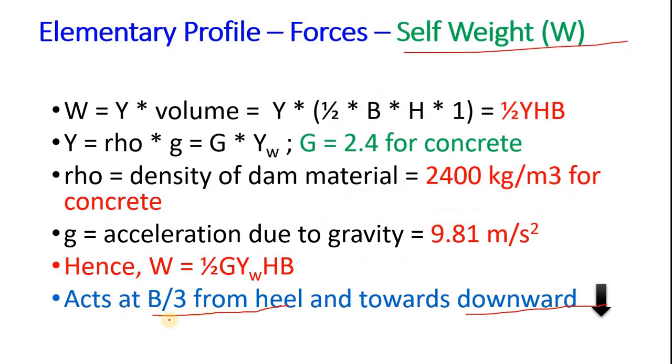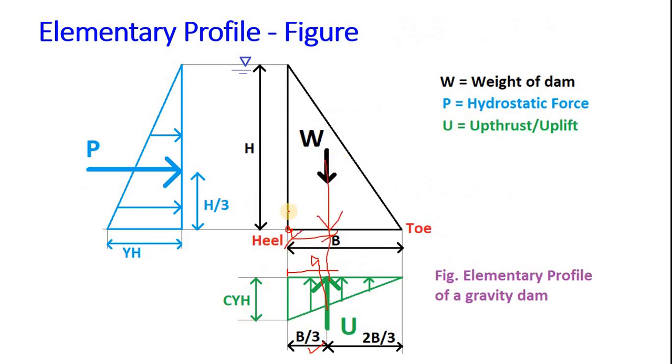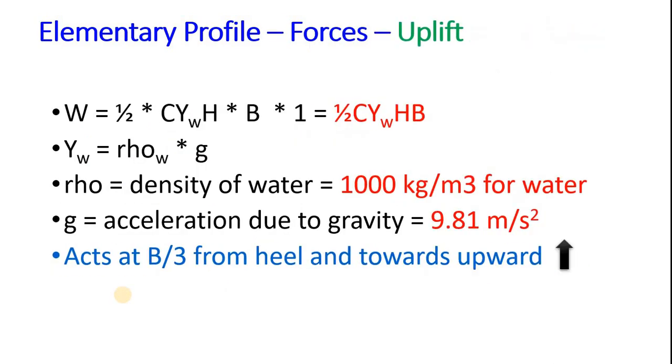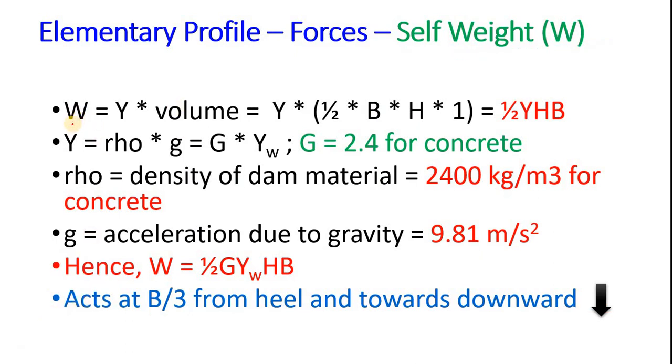Now let's see self weight. Self weight also acts at b by 3 from the heel, but in the downward direction. You can see here, this is b by 3. We know it is equal to gamma into volume. Gamma and volume is given by area of triangle into unit length: 1 by 2 into base into height. This is the area of triangle into unit length, which is this unit length. So we get 1 by 2 gamma, but in this case gamma is of concrete. So rho into g. Rho is the density of concrete which is 2400 kg per cubic meter for concrete.